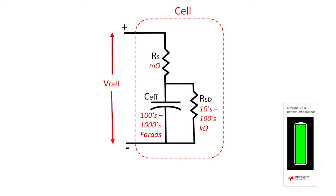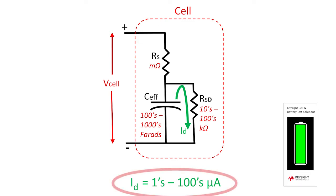When nothing is connected to the cell — an open circuit condition — the effective capacitance discharges through the high-value R-sub-SD, generating a current, I-sub-D, that can range between a few micro-amps to a few hundred micro-amps, depending on cell size. This is the self-discharge current.